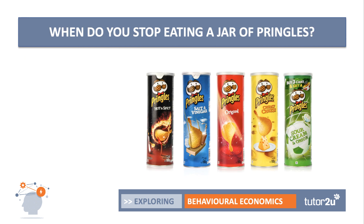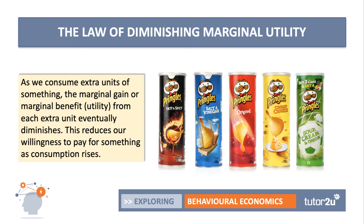Here's an interesting question: when do you stop eating a jar of Pringles? Once you open them, it's quite difficult to stop. In economics, we say that as you consume more of something, there could be a diminishing marginal benefit or marginal gain. The marginal benefit is the satisfaction you get from that next Pringle or that next handful of crisps. If the law of diminishing marginal utility holds true, then our willingness to pay for something goes down as consumption rises. The rational consumer will be tempted by low prices because they can equate the cost of purchase with marginal benefit.